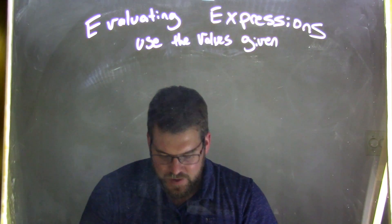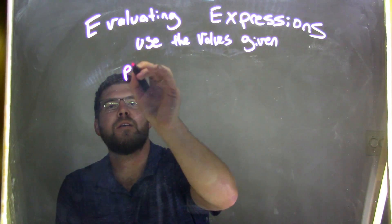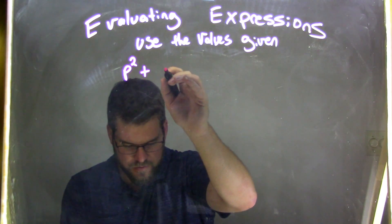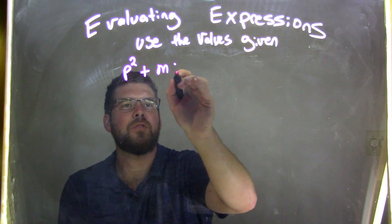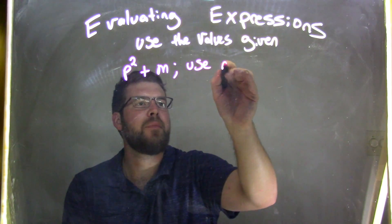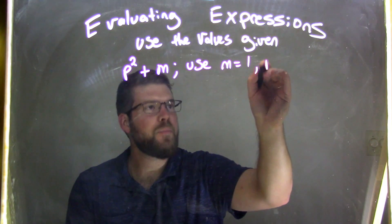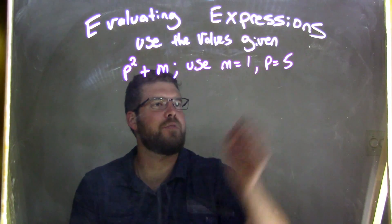So if I was given this expression, p squared plus m, and I was told to use m equal to 1 and p equal to 5, okay?